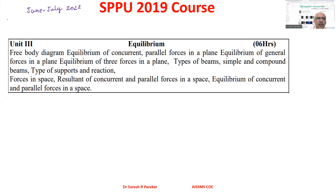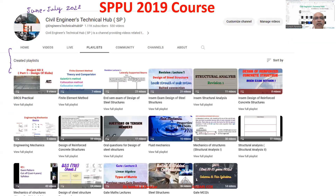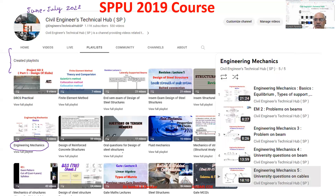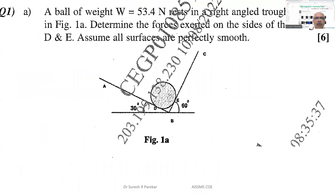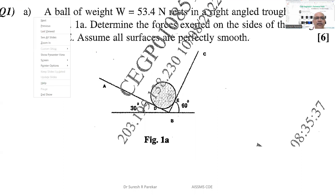We are now covering the questions in this portion. You can go to the Civil Engineers Technical Hub YouTube channel, go to the playlist, and you will come across Engineering Mechanics videos. Now we have a question: a ball of weight W = 53.4 Newton rests in a right angle trough as shown in the figure. Determine the forces exerted on the sides of the trough at D and E.